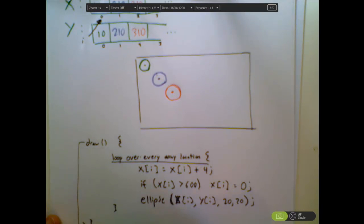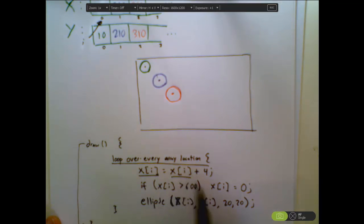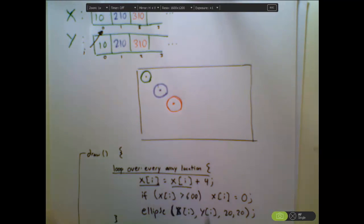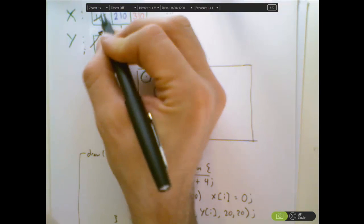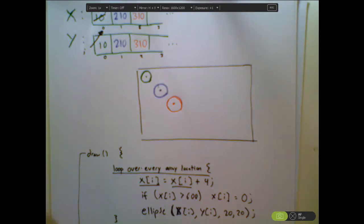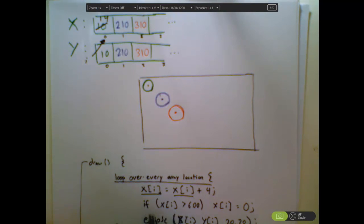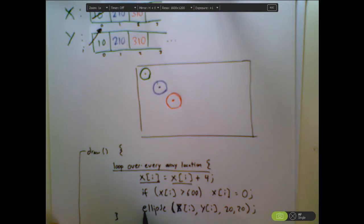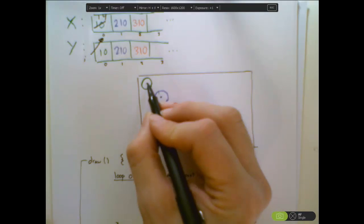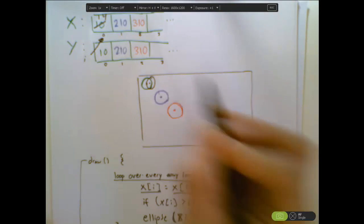So let's pretend i is zero right now. If you remember the notation that you just learned, x zero is referring to whatever number is in location zero. So I'm taking the number in location zero, I'm adding four, I'm storing it back into location zero. So this 10 becomes 14. Alright, now I check to see if the number in location zero is bigger than 600, it's not. So now I tell it to draw an ellipse at the number in location zero for x and the number in location zero for y. That's going to be 14, 10. So it's going to draw this one, scoot it over just a little bit.